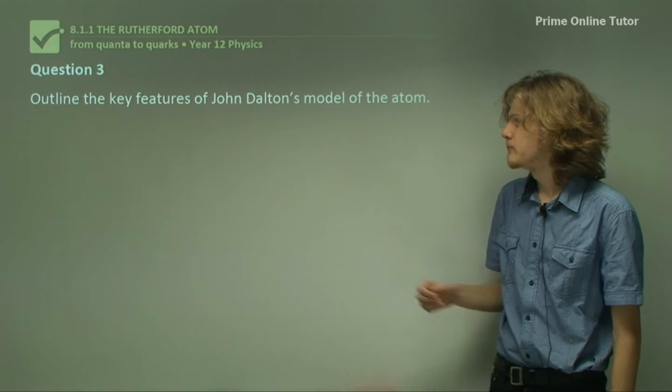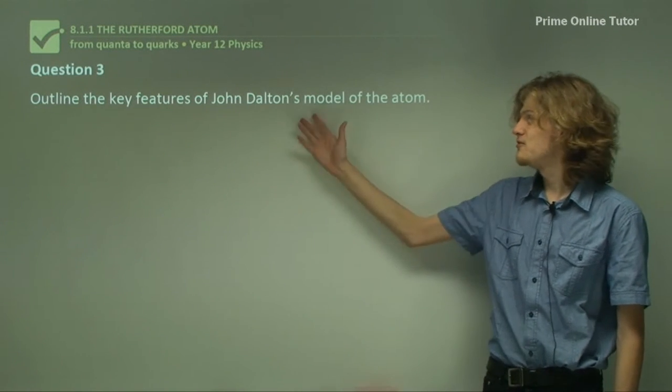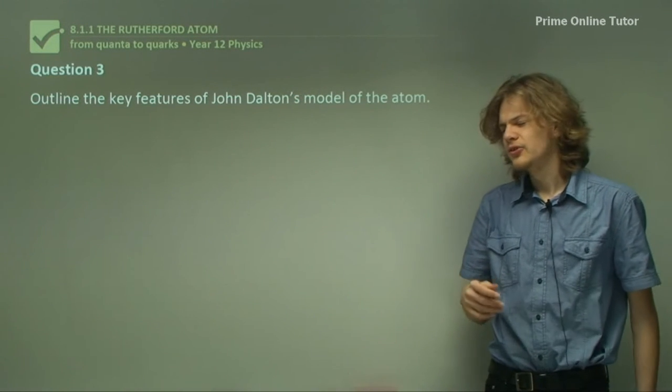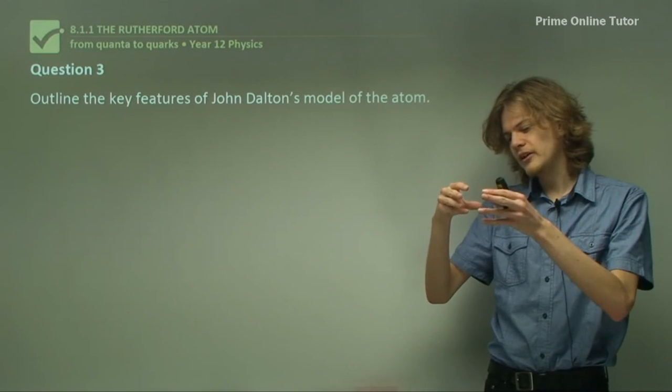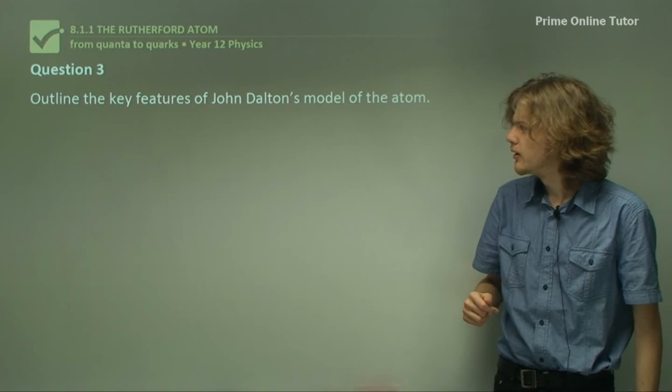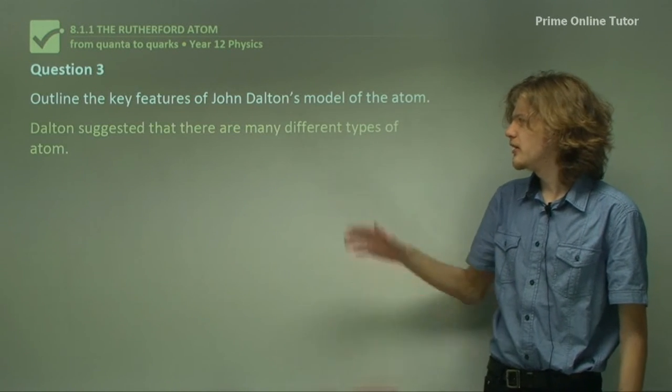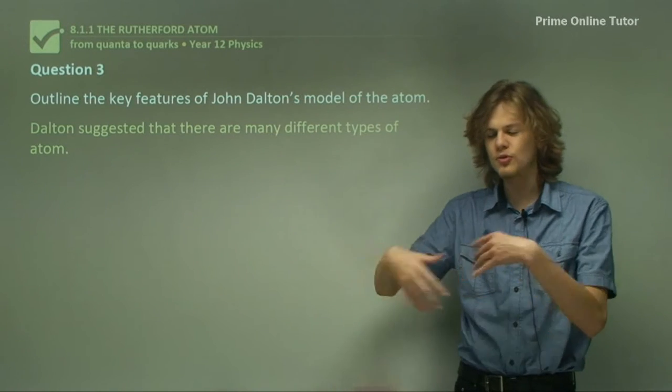Question three. Outline the key features of John Dalton's model of the atom. Now it says features here, so we can't just name one. So let's think about the model a bit. It's the one that had lots of indivisible atoms that made up gases, right?